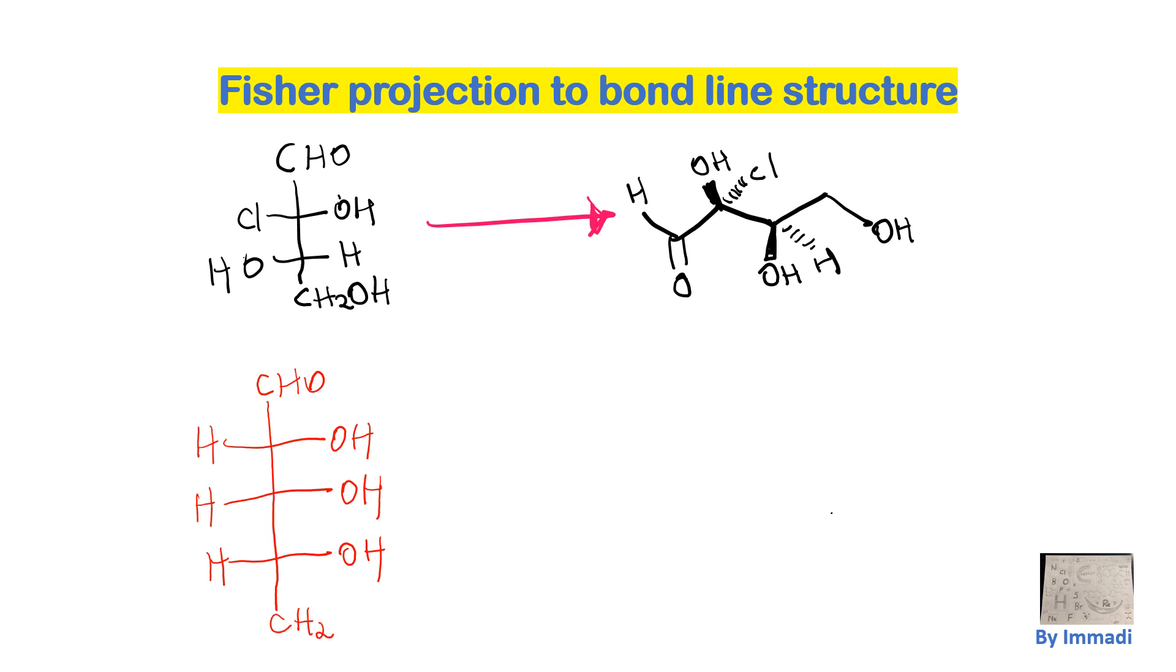So imagine you have a structure like this which is a Fisher projection. So whenever you want to convert it into a bond line, just let's do this. So start with CHO like this.